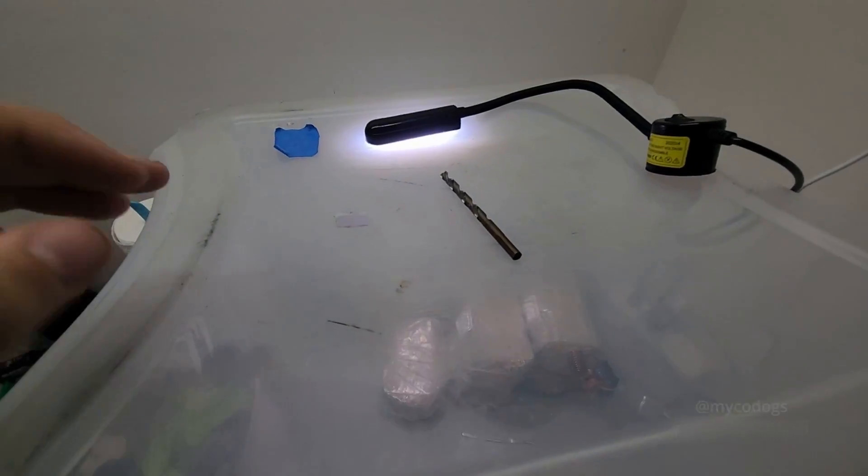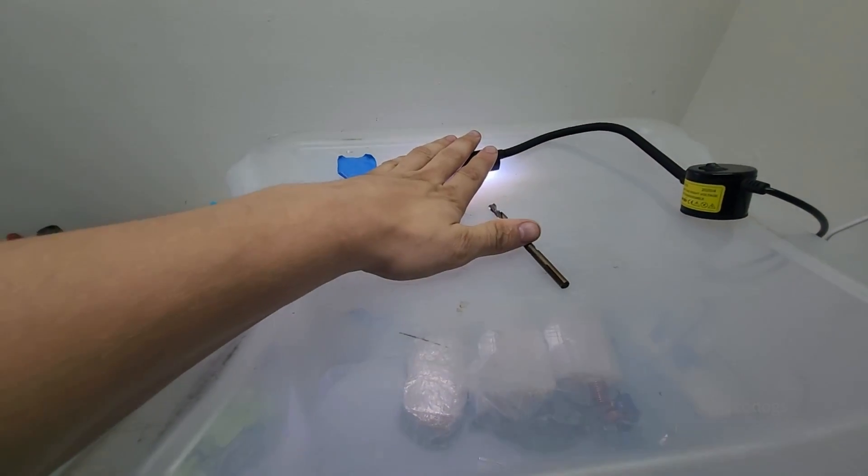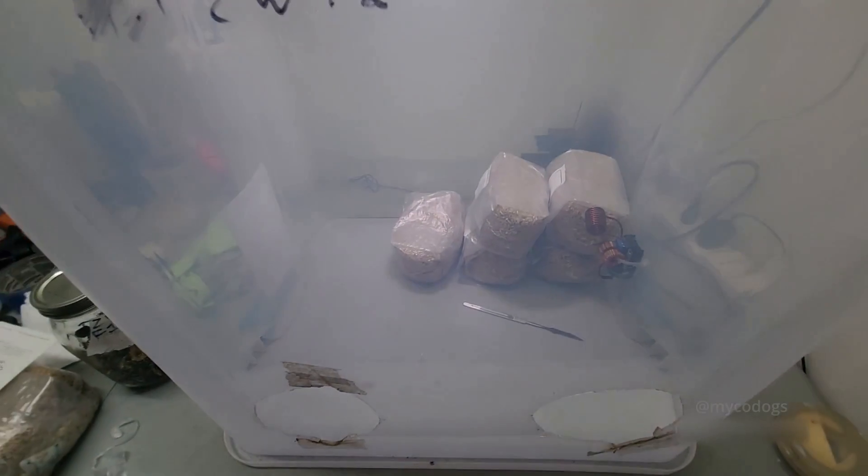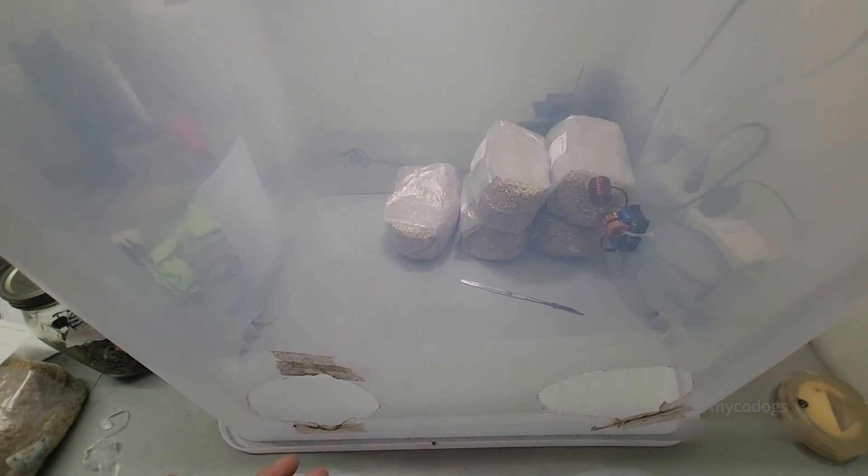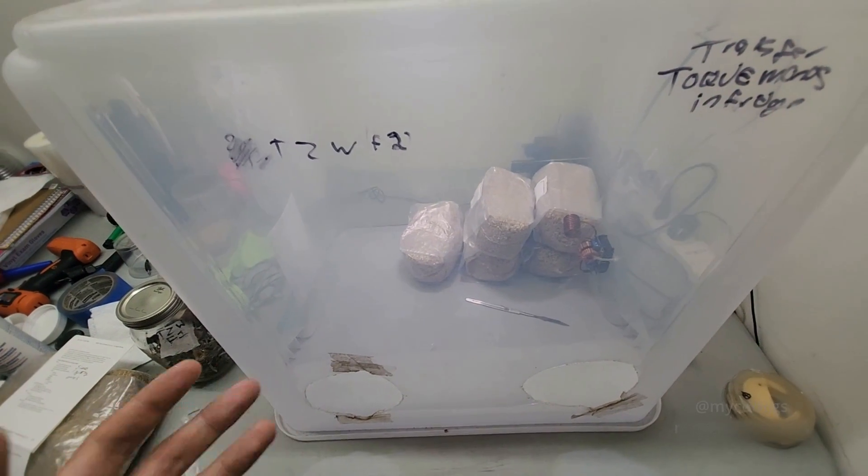Another very important thing for working inside a still air box is having good lighting. I use this very bright LED light directly on top of it and that illuminates my workspace pretty well. I also have this light directly above it, which also illuminates what I'm working on quite well.